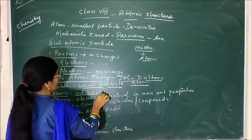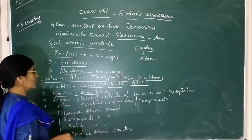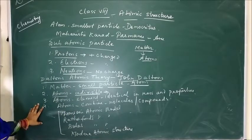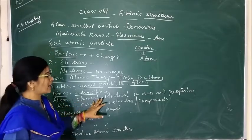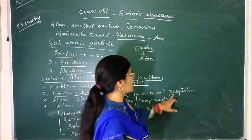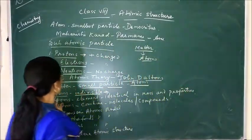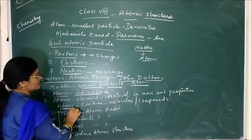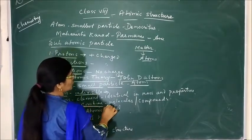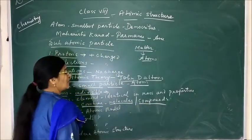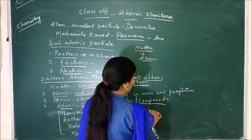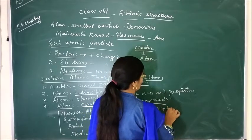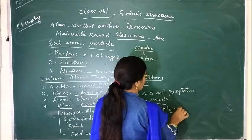John Dalton described that the atom is an indivisible particle which can neither be created nor destroyed. He also stated that all atoms of an element are identical in mass and properties. A third point was that atoms combine together to form molecules and compounds. For example, two hydrogen atoms combine together to form a hydrogen molecule, H2.